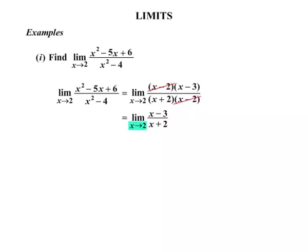At this stage we can substitute x equals 2. When we put 2 in for x, we get 2 minus 3 on the top and 2 plus 2 on the bottom, and that simplifies to minus 1 quarter.